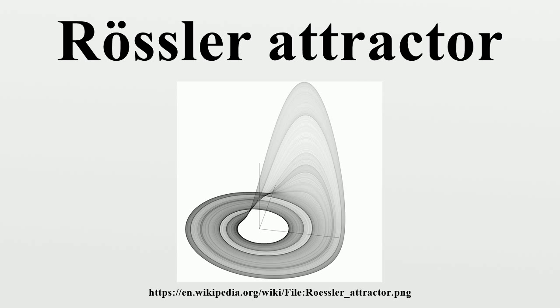Additionally, the half twist that occurs in the Rossler attractor only affects part of the attractor. Rossler showed that his attractor was in fact the combination of a normal band and a Möbius strip.